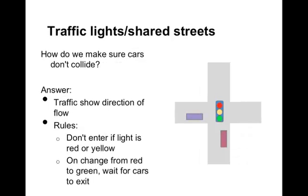Our third example is traffic lights and shared streets. We have a shared resource — the intersection — that cars in both directions want to use. The rule is: don't enter the intersection if the light is red or yellow, and when it turns green in your direction, wait for cars already in the intersection to exit. Following these rules prevents collisions.